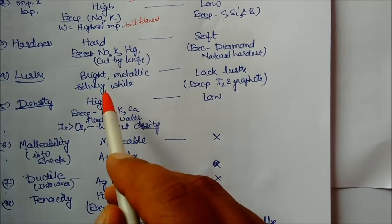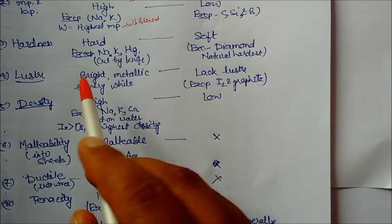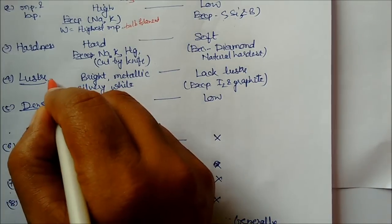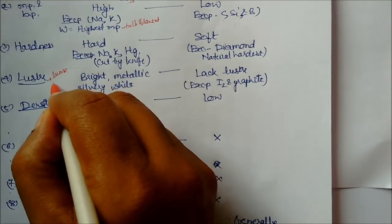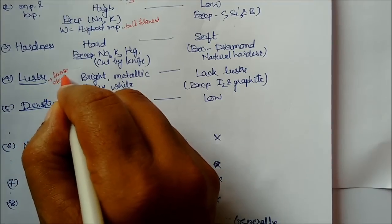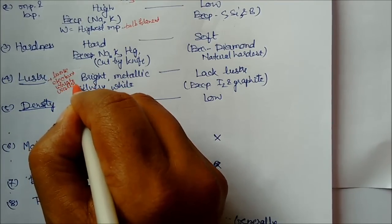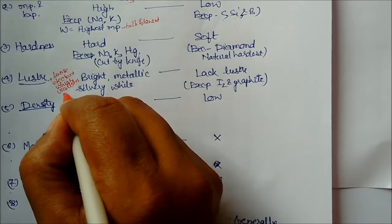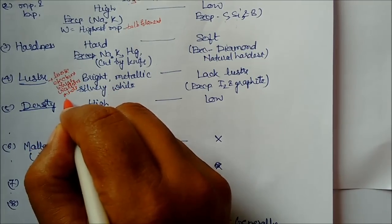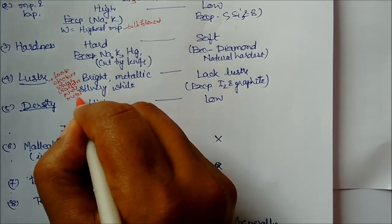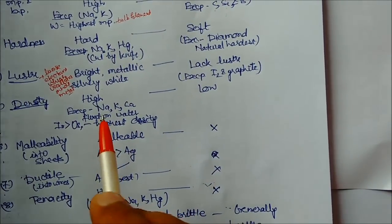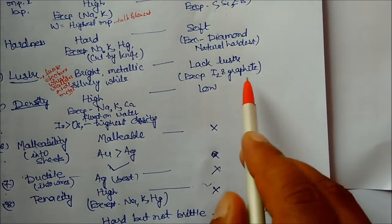Luster: metals are bright, metallic, silvery white in color. They are lustrous because they have loose electrons which oscillate inside the metals. Due to these oscillations, shining appears in the metals. The same phenomenon also happens with iodine and graphite.